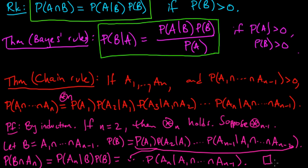That's what's called the chain rule of probability. It's a very important rule to remember. Oftentimes you'll see some probability involving a bunch of events, and you'll factor it in this way. Let's stop there, and next we'll take a look at the partition rule.